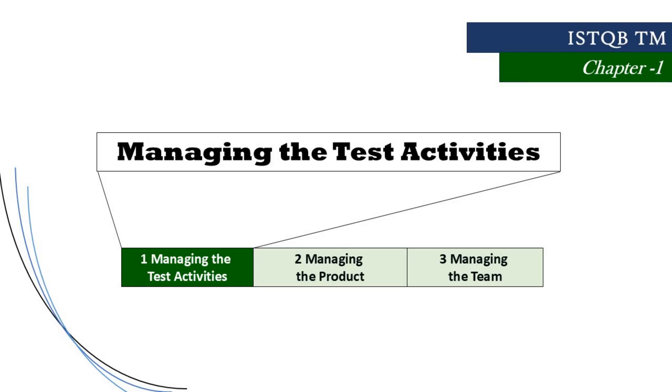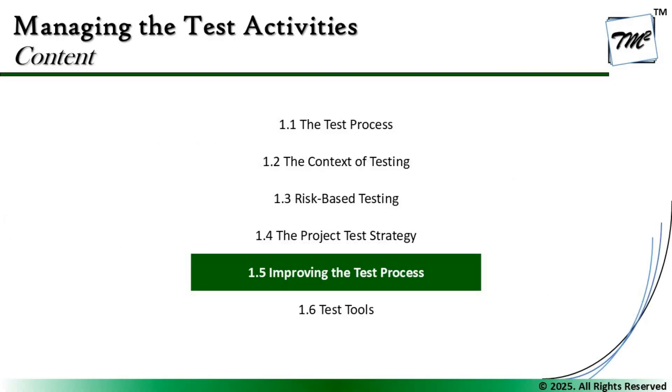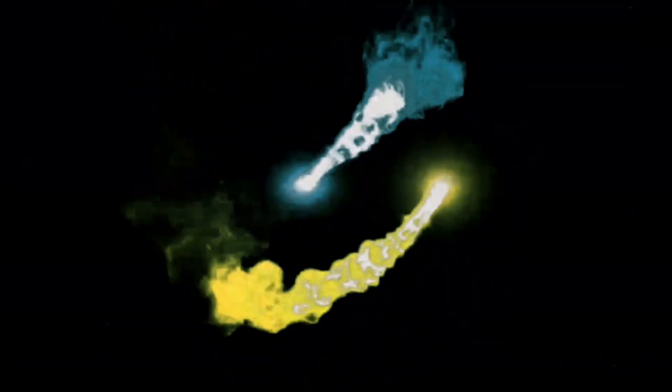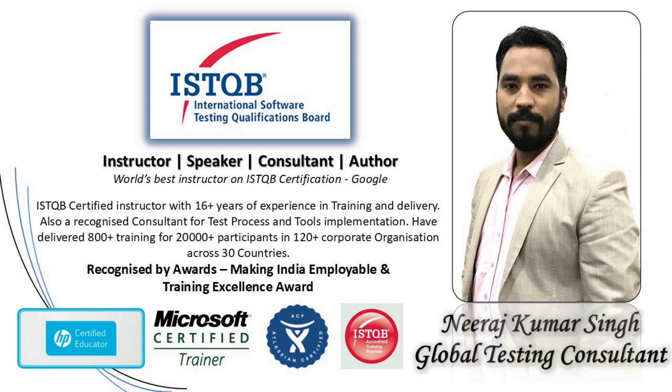Hello friends, greetings for the day. Welcome back to another tutorial on ISTQB Advanced Level Test Management certification. We are in chapter one, talking about 1.5 - improving the test process. Today we shall be looking at the next sub-segment: 1.5.3, analytical-based test process improvement approaches, and understanding how organizations can internally handle the improvement process and use their own data to define the improvement plan.